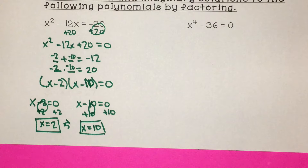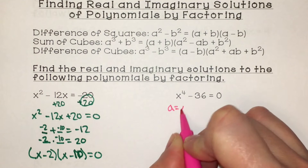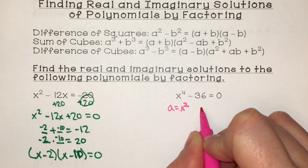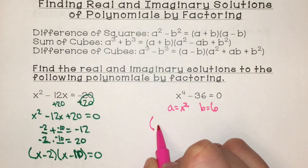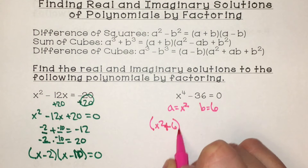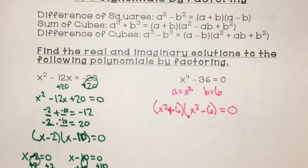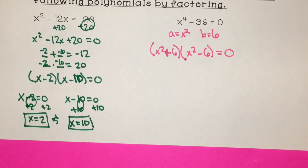Hopefully you can see that those are both perfect squares, so I'm going to use the difference of squares. I know that x squared times x squared is x to the fourth, and to figure out what b is, I know 6 times 6 is 36. So we have x squared plus 6 times x squared minus 6 equals 0 — that's just the difference of squares.